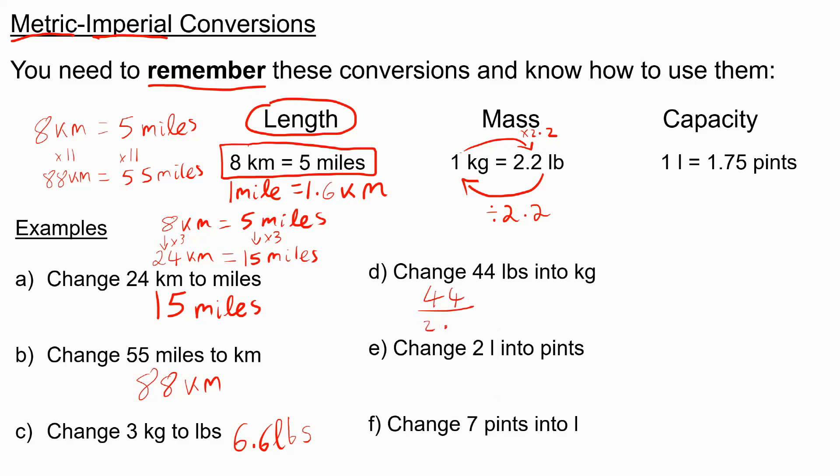Normally you'd have a calculator for something like that, but if we didn't, we could now multiply the numerator and denominator of the fraction by 10 to give us 440 over 22. 22 goes into 44 twice, so this ends up as 20. So we can say 44 pounds is 20 kilograms.